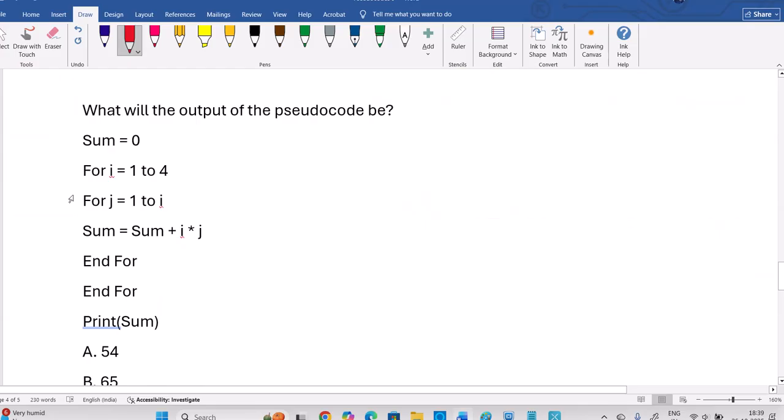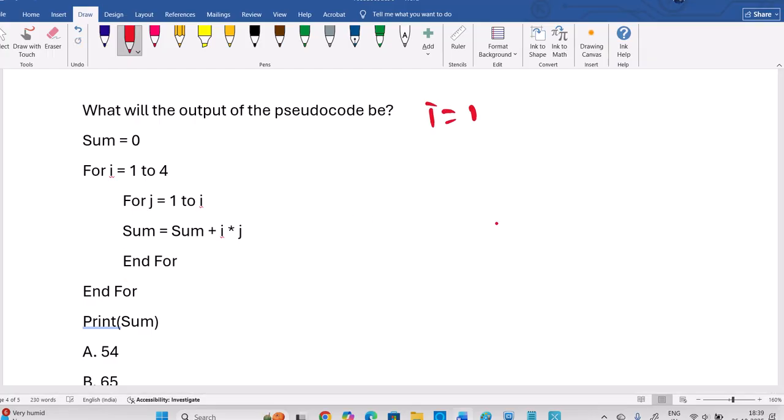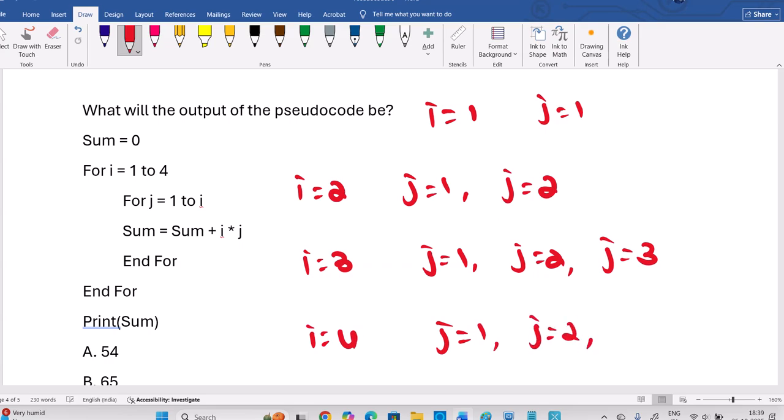Right? Whereas next one, sum is initialized as 0 is pretty much similar to previous question where, okay, I equals 1, J equal to 1 to I. Right? So I equals 1, J equals 1. When I is 2, J is 1 comma 2. When I is 3, J can be 1, J can be 2, J can be 3. When I is 4, J can be 1, J can be 2, J can be 3, J can be 4.